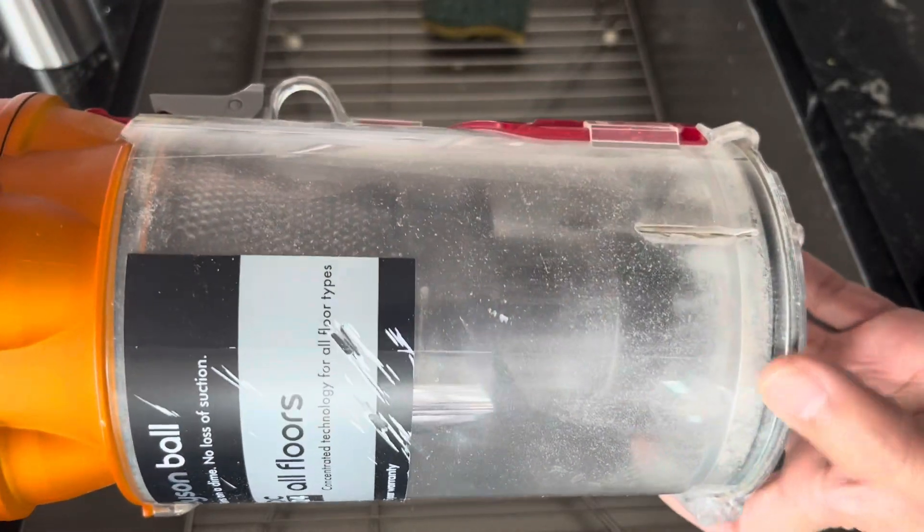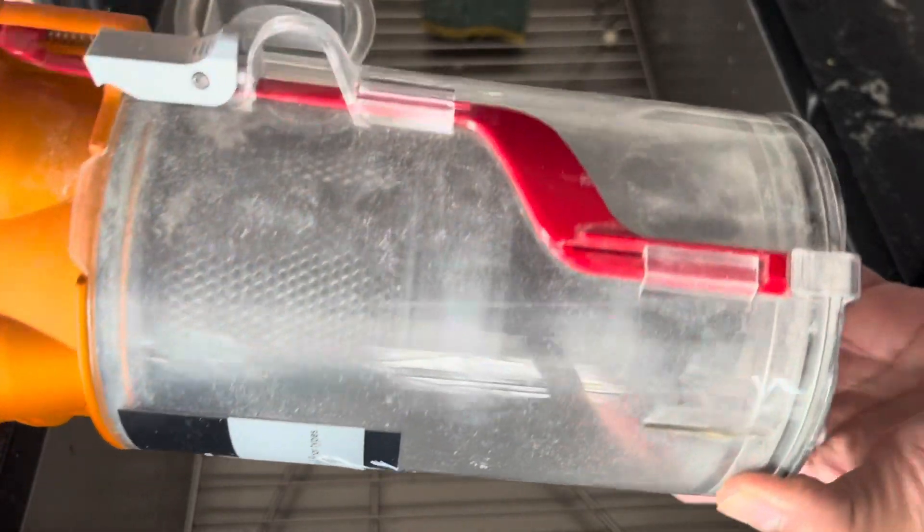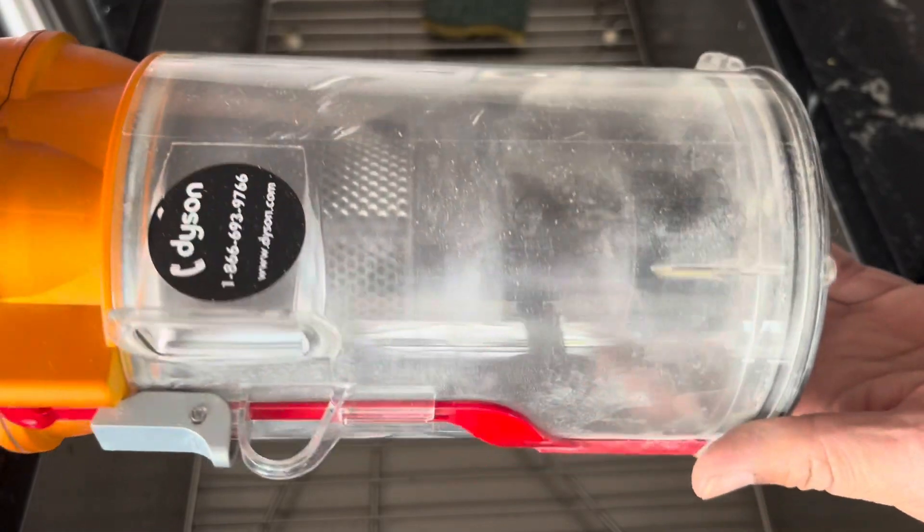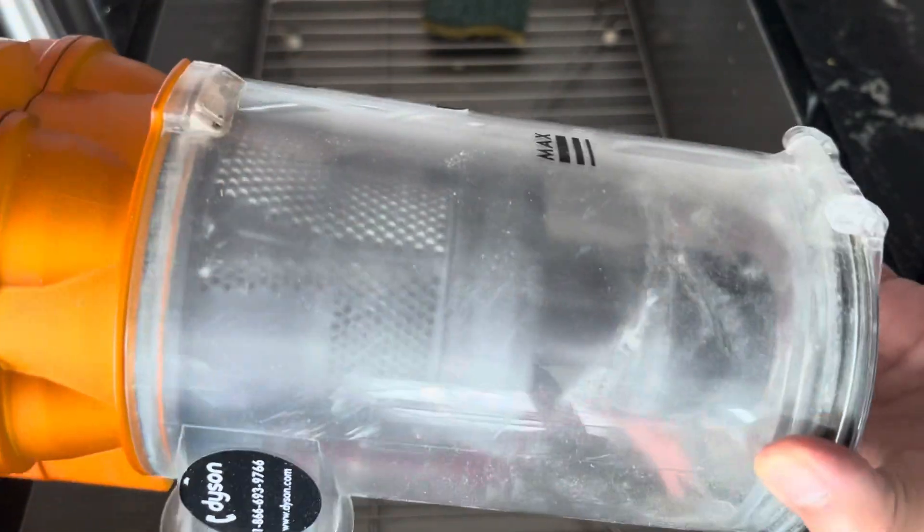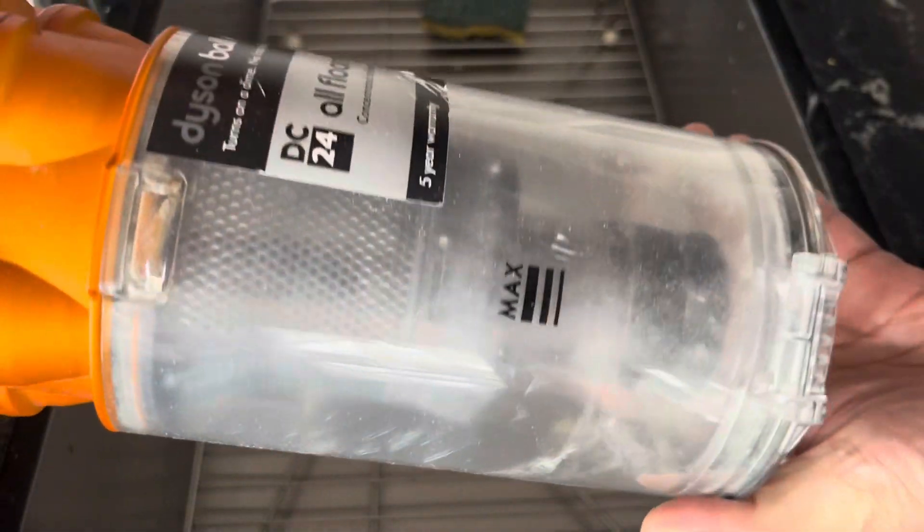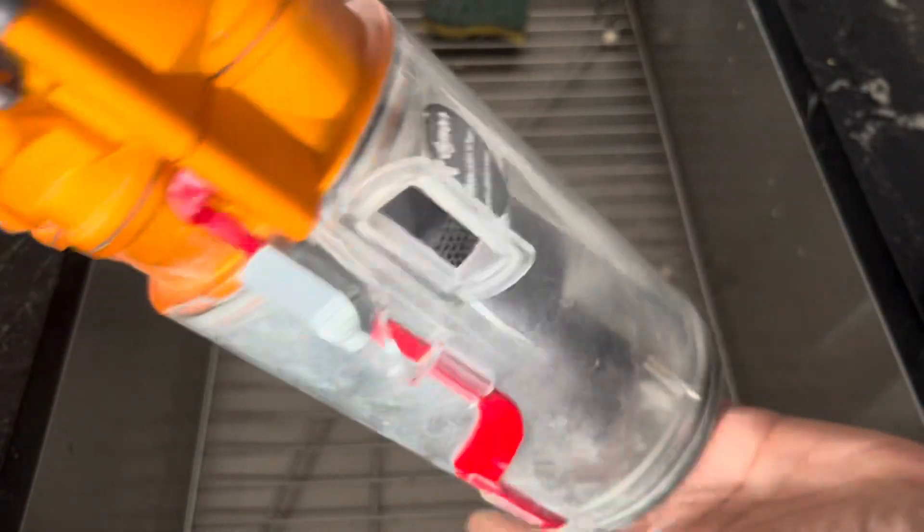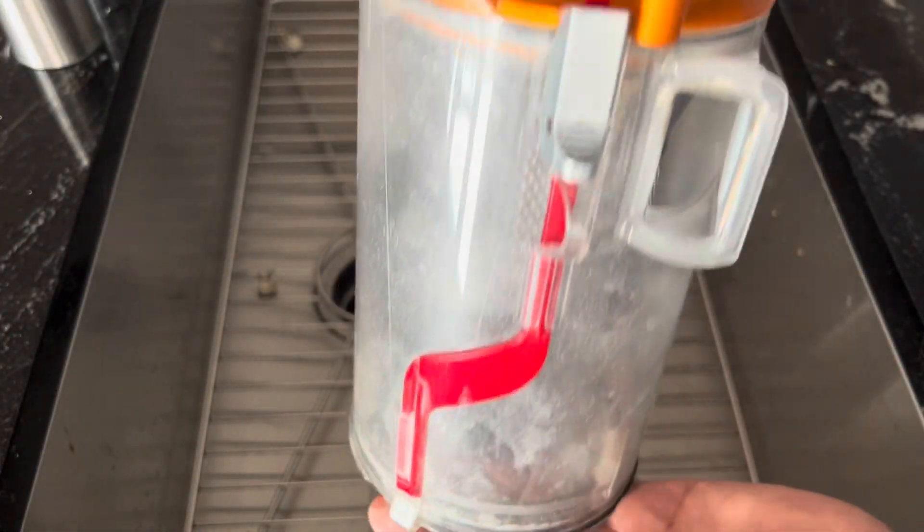This is my Dyson DC24 cyclone separator dust collector and as you can see it is pretty dirty. I plan on doing a deep clean of it, so let's see how it goes.